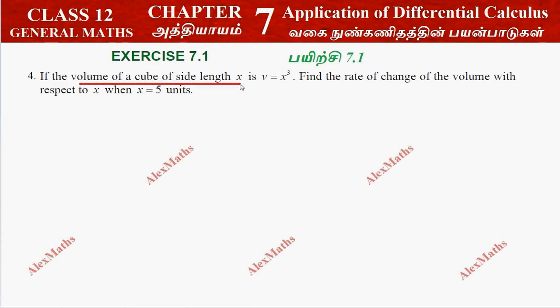If the volume of a cube of side length x is V equal to x cube, find the rate of change of volume with respect to x. That is dV by dx.